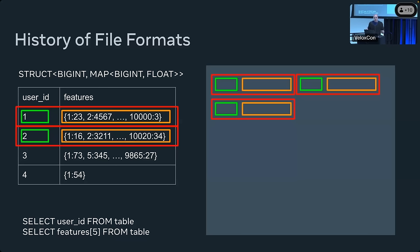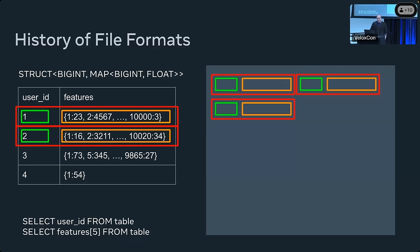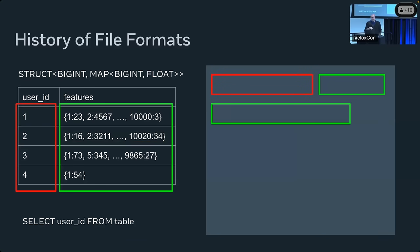Row format is super easy to write. But if we try to project one column — say, user ID — it becomes really messy because we need to find the user ID everywhere in the file. If user ID is a variable-length string, it's very complex. It gets even trickier if we want to project a feature with a specific key. So let's try to solve just the 'select user ID' problem first.